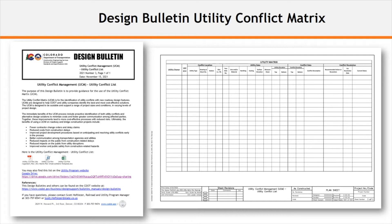The UCM can be found in PDF format. There is also a MicroStation DGN file and an embedded utility matrix template in Excel format in a spreadsheet. It can be found at the Utility Program website and also at the following Google Drive link.